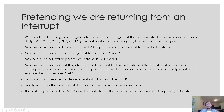We then push the user code segment (0x1b), and finally push the address of the function we want to run in userland. If we're resuming a task already running, this will be the instruction pointer — the address that was running before we saved the user task's registers. The last step is to call the IRET instruction, which forces the processor into the userland unprivileged state.